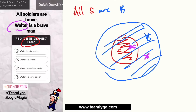Since ang hinahanap natin is a statement that is false, iisa-isahin natin. Sabi, Walter is not a soldier. The catch there would be the word 'not.' Hindi tayo sure kung hindi siya soldier kasi pwede siyang soldier, pwedeng hindi. So ibig sabihin, this statement is not 100% false — may probability na tumama siya. So ito ay hindi pwedeng maging sagot. Next, Walter is a soldier — same concept. May possibility na soldier siya, and dahil may possibility, hindi siya pwedeng false. So hindi rin pwedeng sagot.